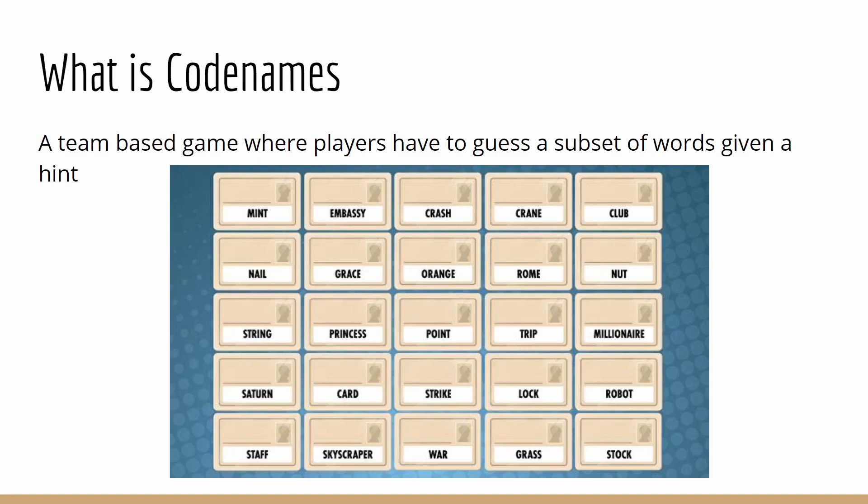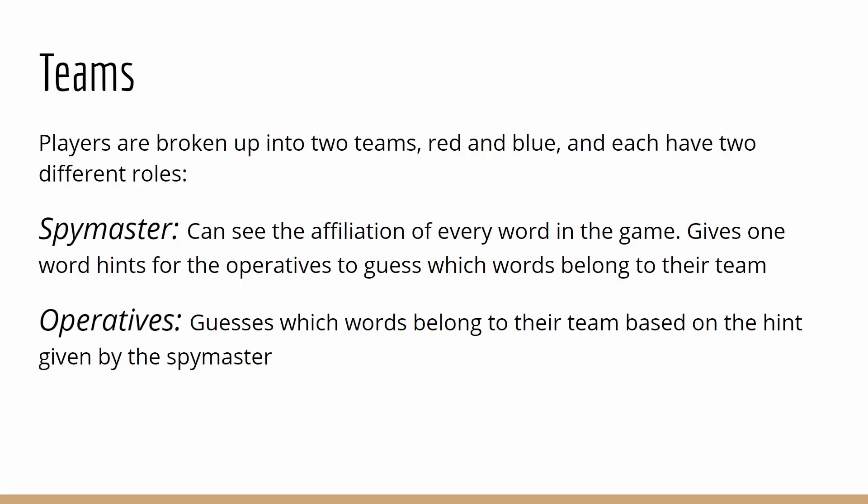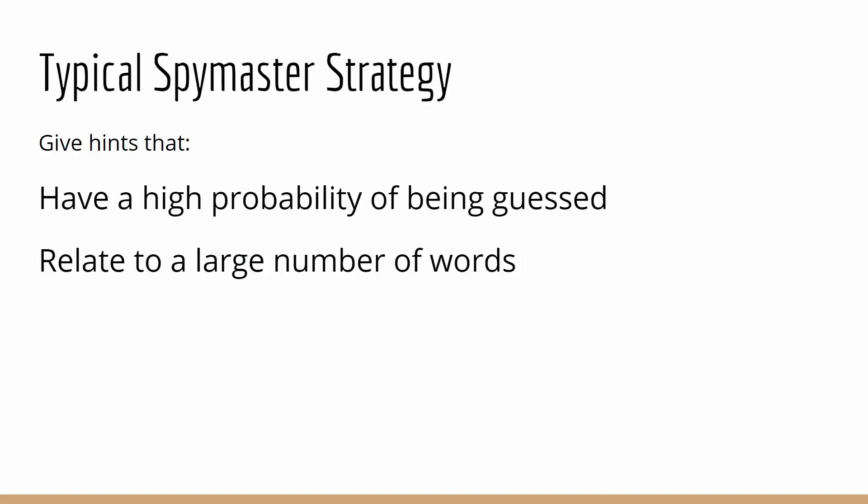Codenames is a team-based game where players have to guess a subset of words given a hint. Players are broken up into two teams, red and blue, and have two different roles. There's a spymaster, which can see the affiliation of every word in the game, and they give one word hint for the operatives to guess which words belong to their team. There's the operatives, who are guessing the words using hints given by the spymaster. The typical spymaster strategy is to give hints that have a high probability of being guessed and relate to a large number of words.